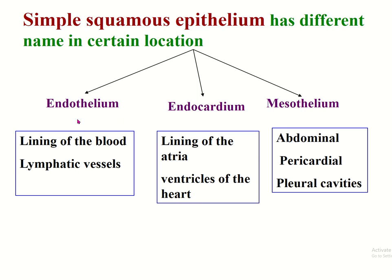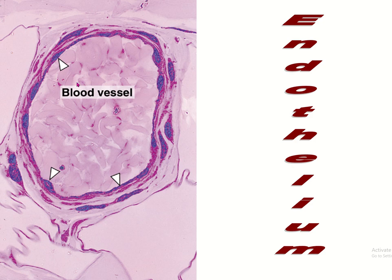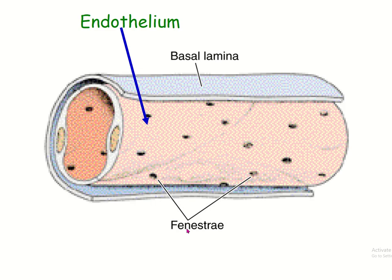Simple squamous epithelium has different names in different locations. It is known as endothelium in the lining of blood vessels and lymph vessels; endocardium in the inner lining of the heart; and mesothelium in the lining of the peritoneum, pericardium, and pleura.